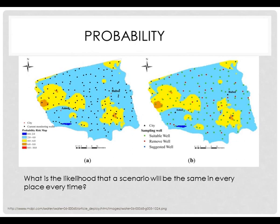Or we're talking about probabilities that relate to human behavior, such as predictive crime mapping, economic patterns, and so on. So maps will consider the probability of isolated events or the probability of more than one event. We can ask: what is the likelihood that this scenario will be the same in every place, every time?